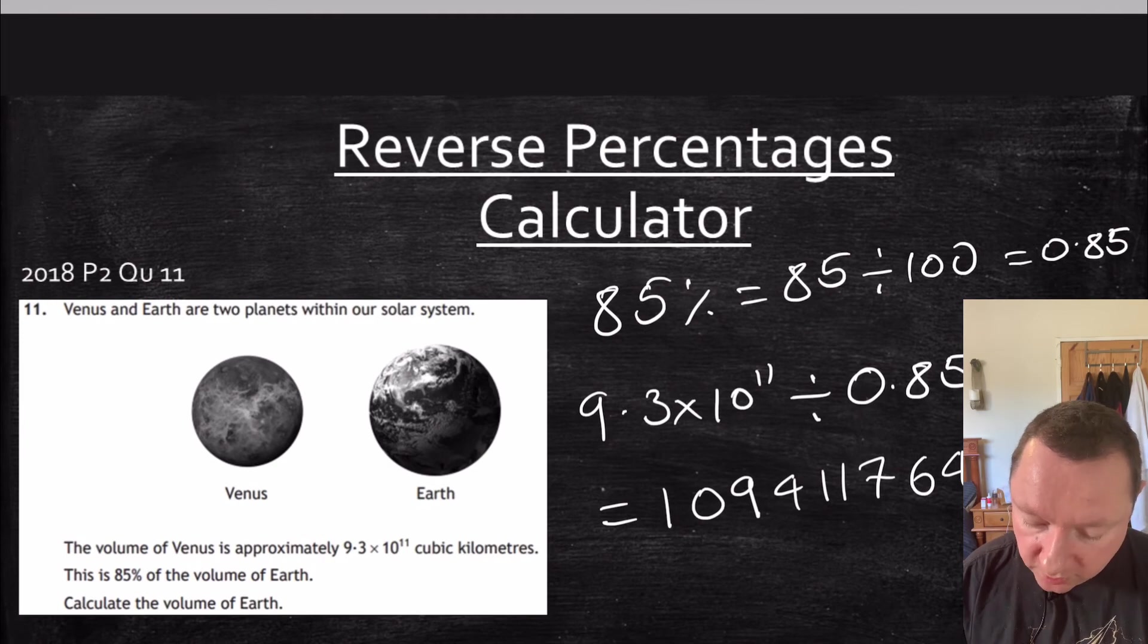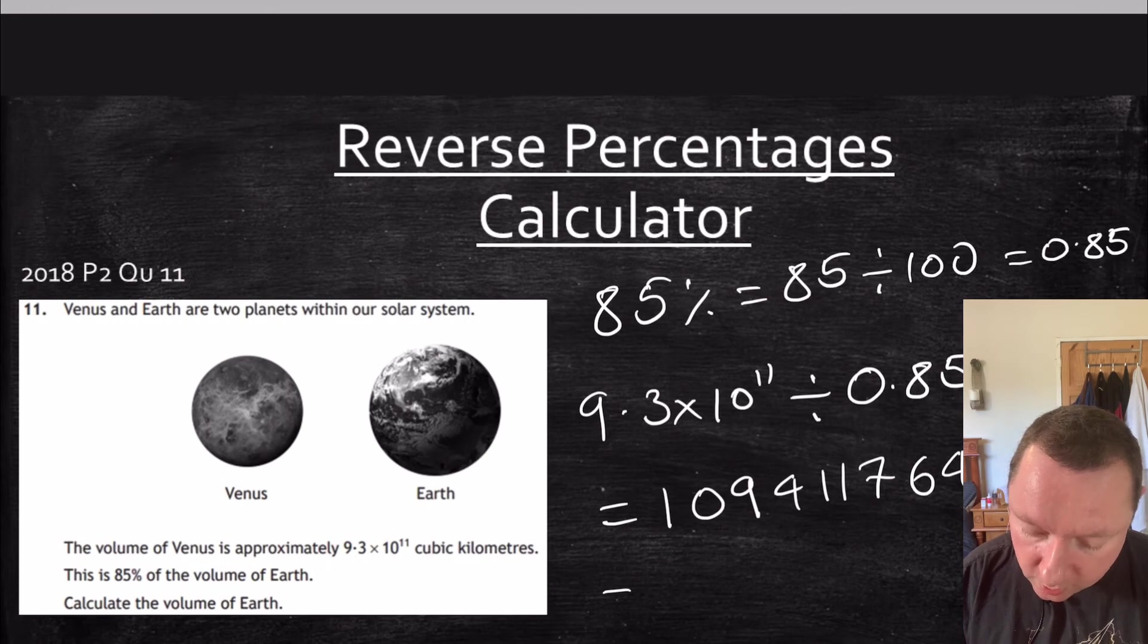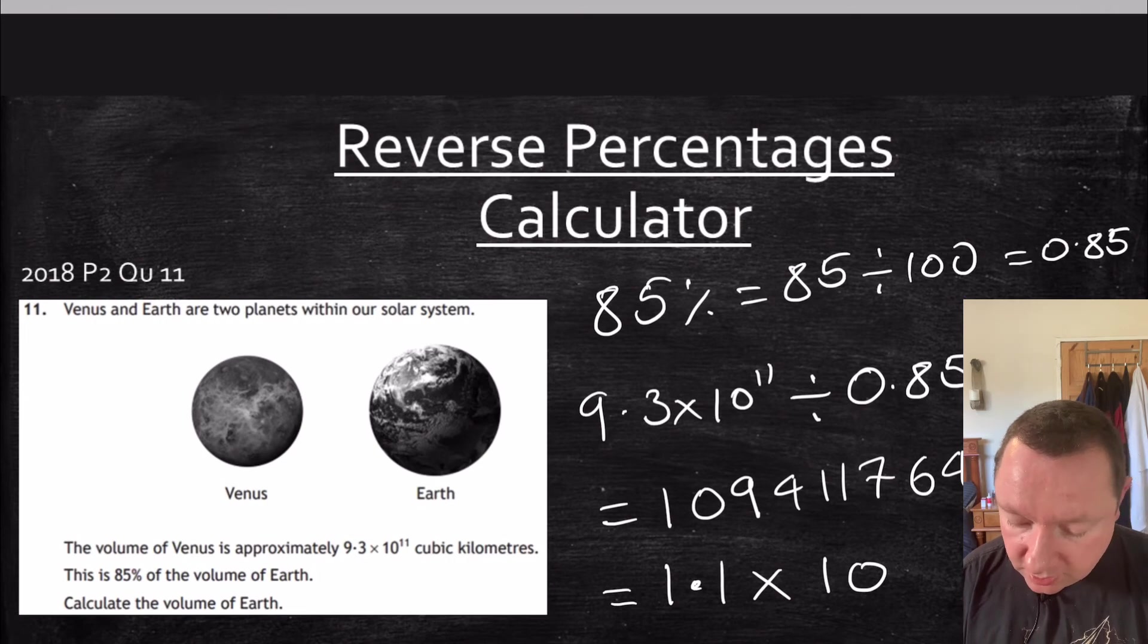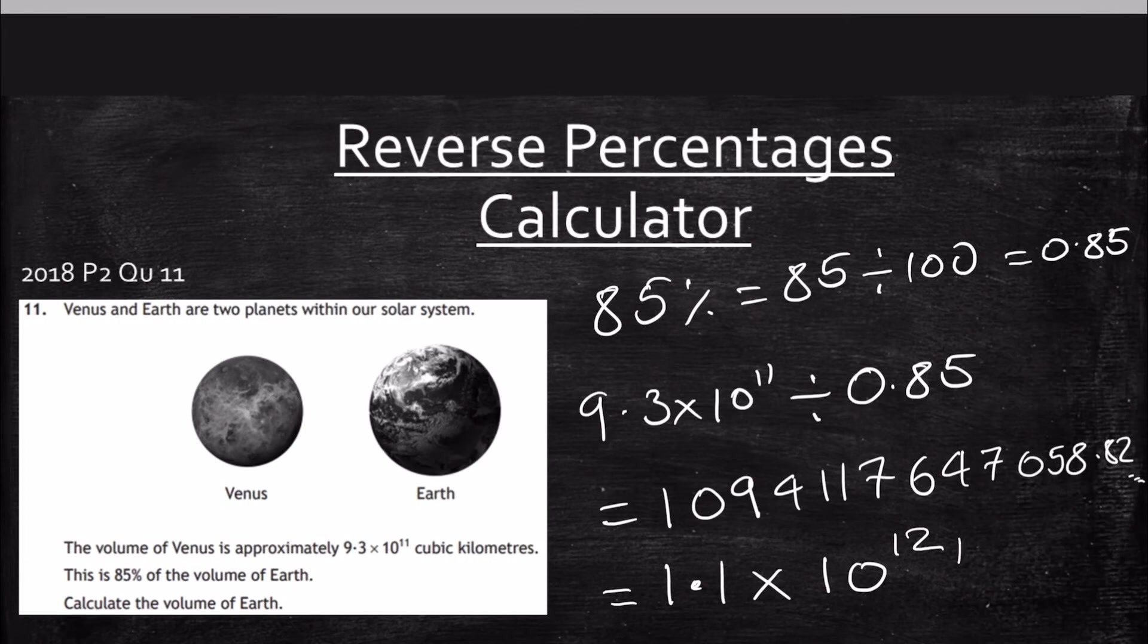So I will, just for the sake of this, round this to the same degree of accuracy as the question. So two significant figures. So that gives me 1.1 times 10 to the power of all the numbers after the first 1. 1, 2, 3, 4, 5, 6, 7, 8, 9, 10, 11, 12 up to the decimal place, to the power of 12. And it's cubic kilometers. So kilometers cubed.